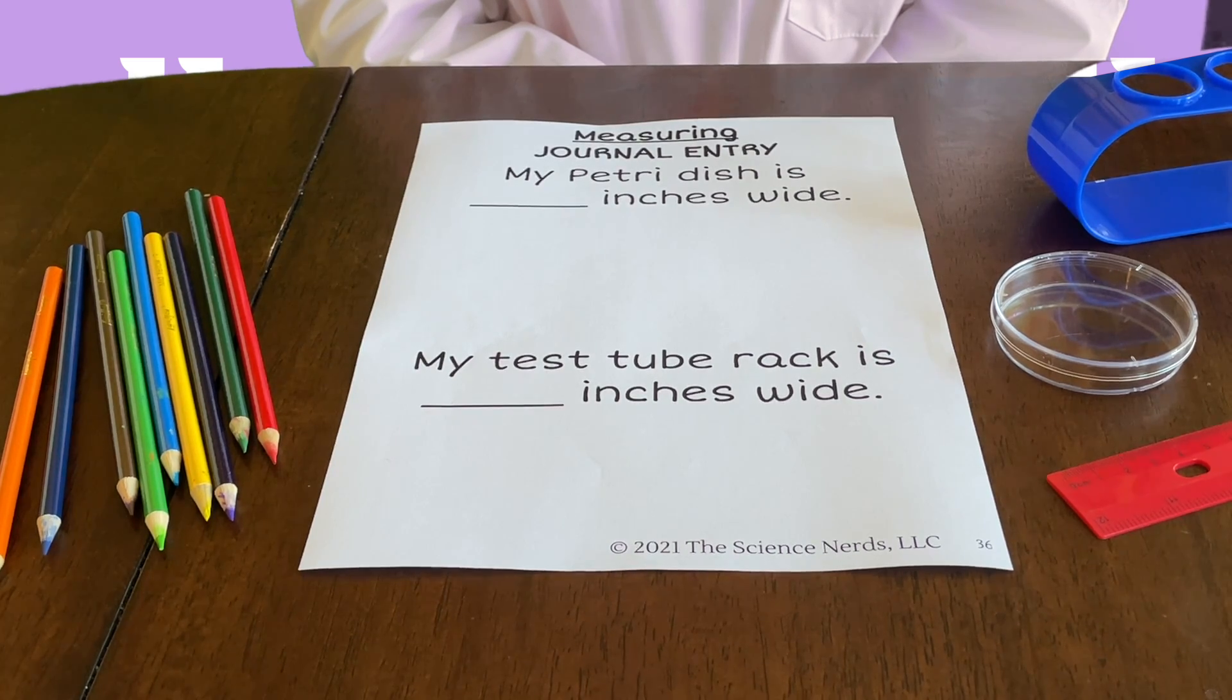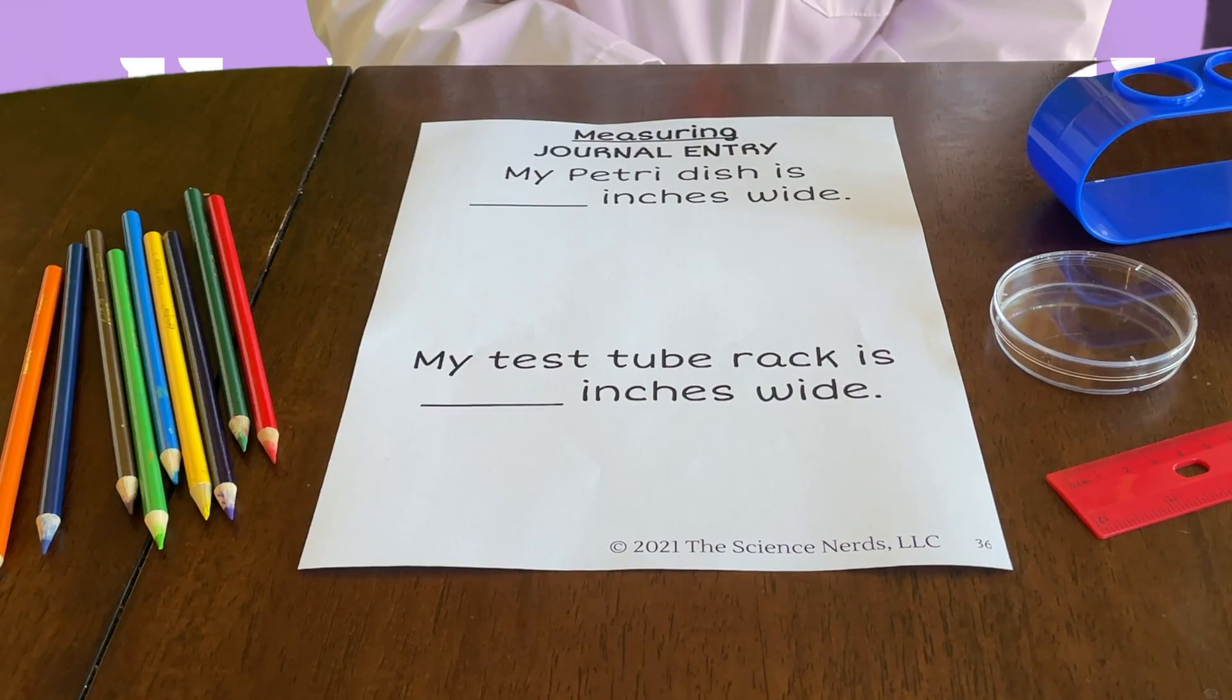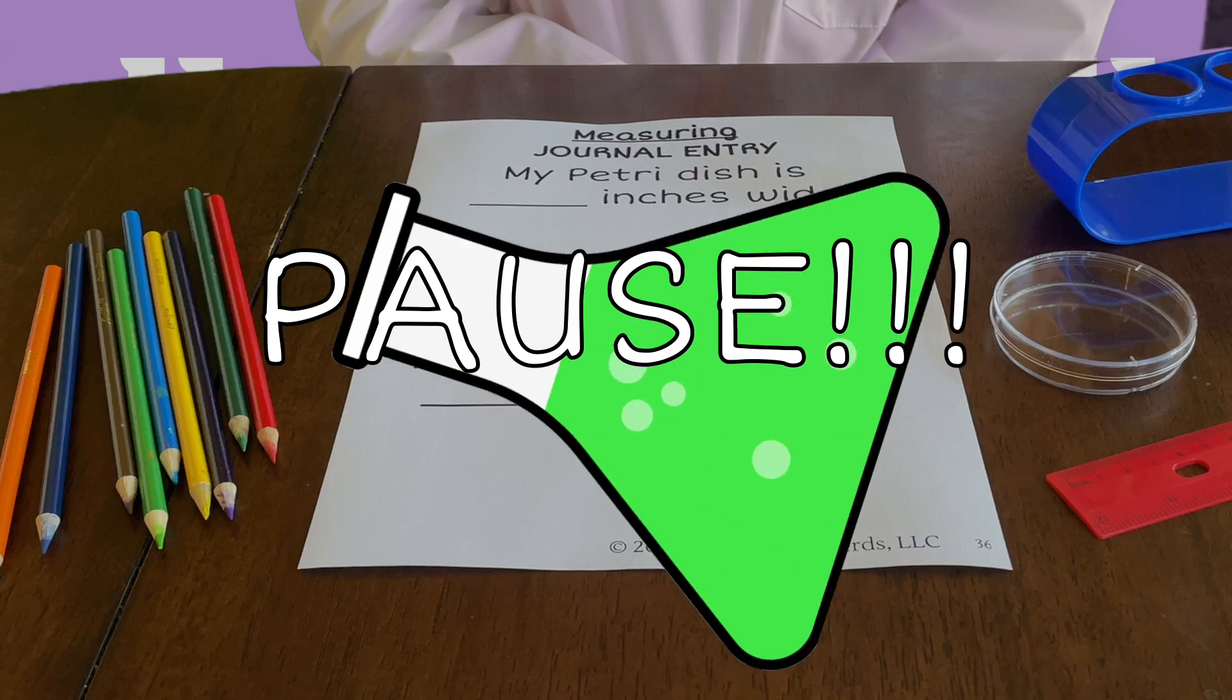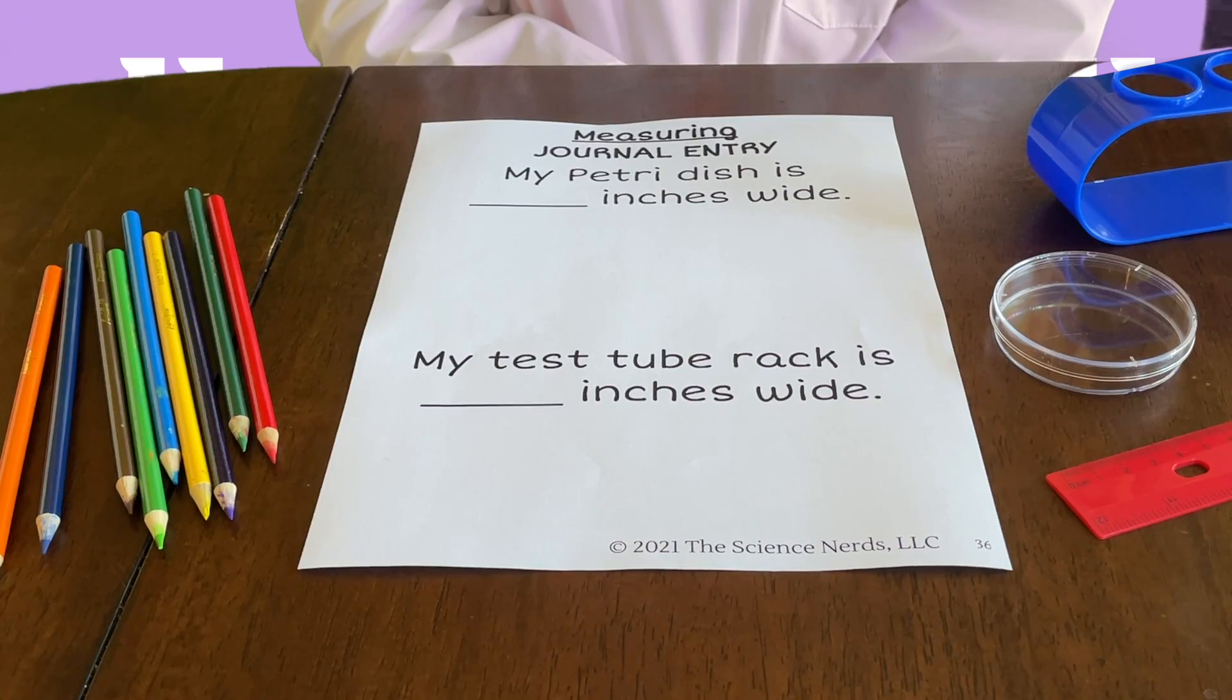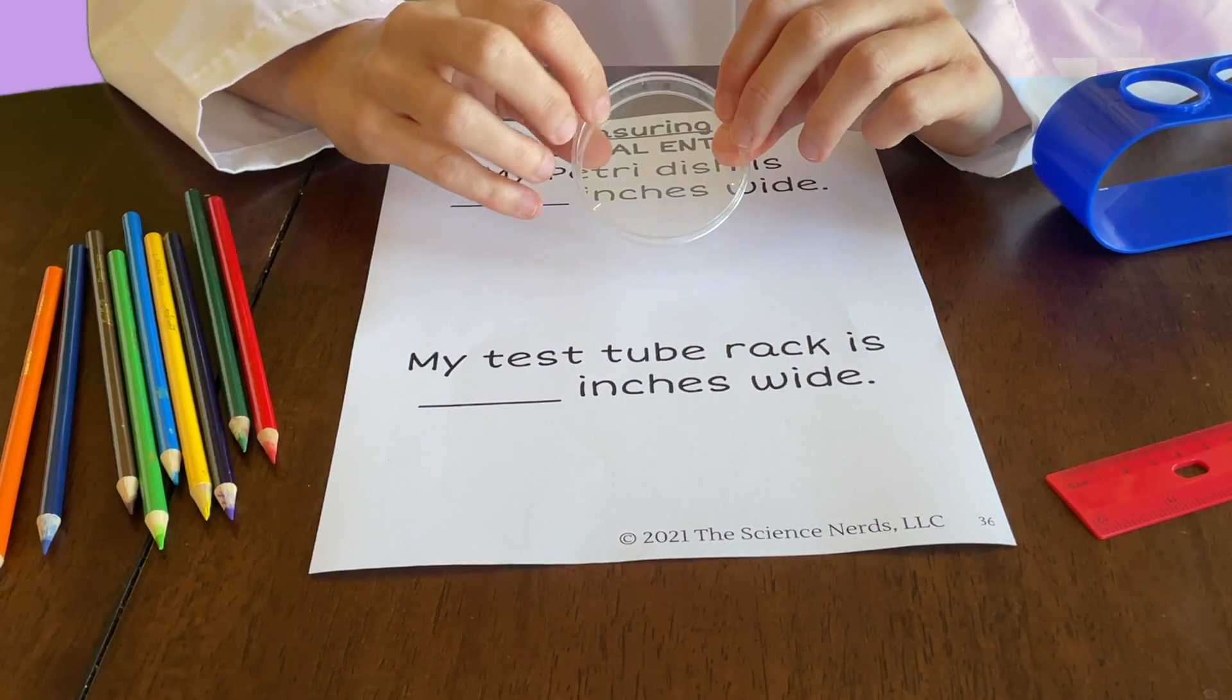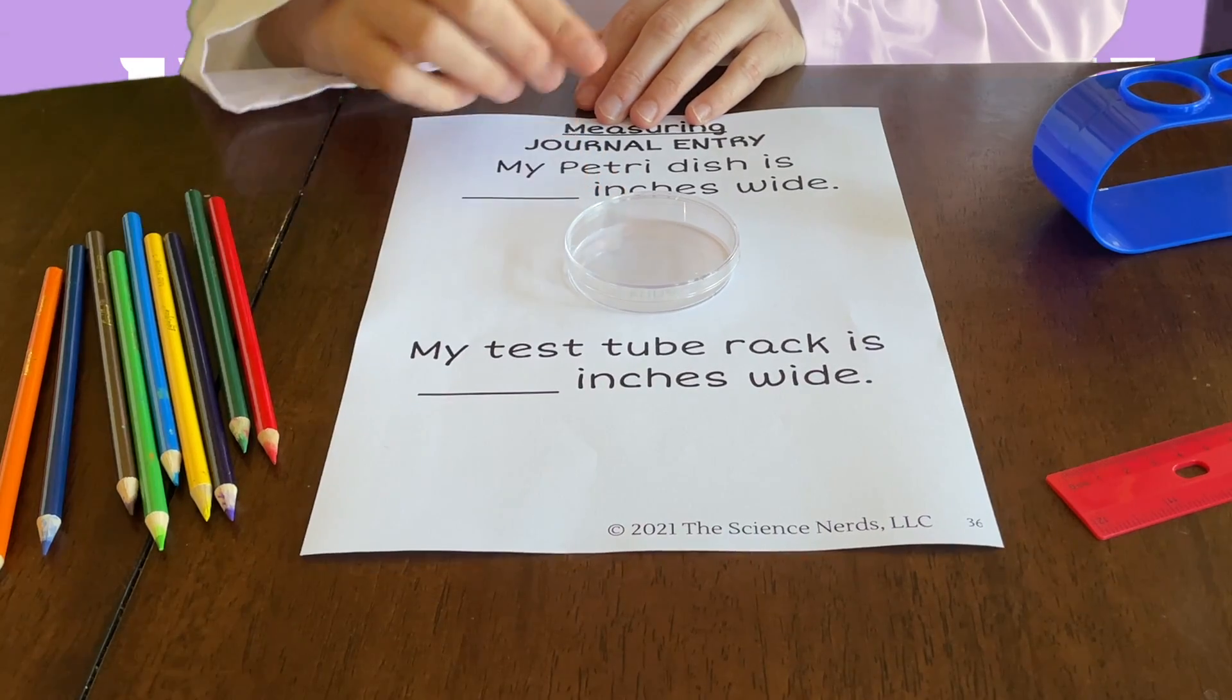Now that you've gathered your materials, turn to page 36 in your lab journal. Pause the video until everyone is ready. Step 1: Find your petri dish. Place it on your paper between the two sentences. Keep the lid on and trace around it in your journal.